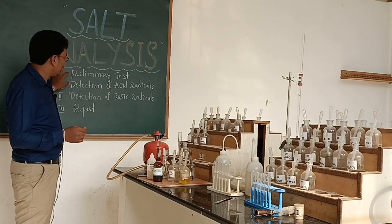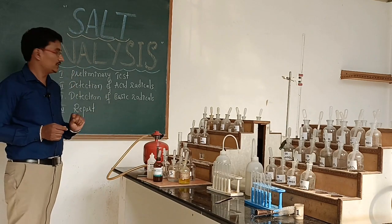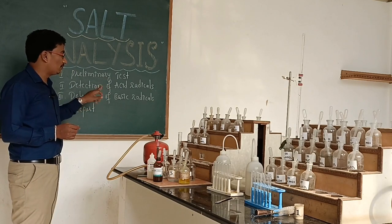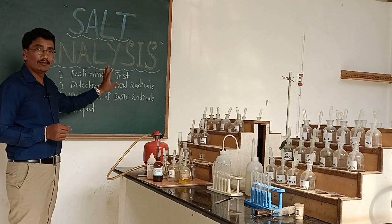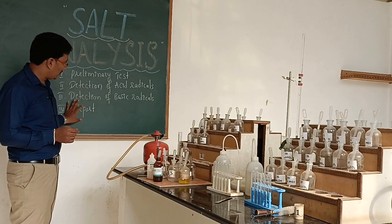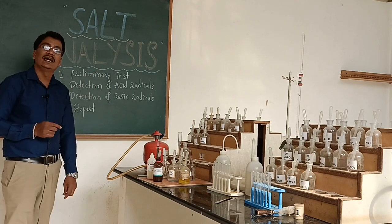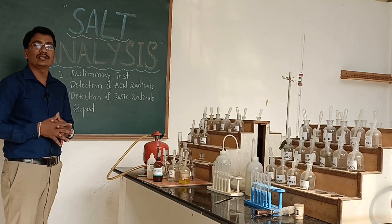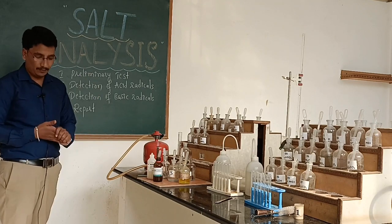The preliminary test carries 1 mark, the detection of acid radical carries 5 marks, and the detection of basic radical carries 4 marks, plus 1 mark for the report. Total salt analysis includes 10 marks for our second use in the laboratory exam. We have to follow these four steps.